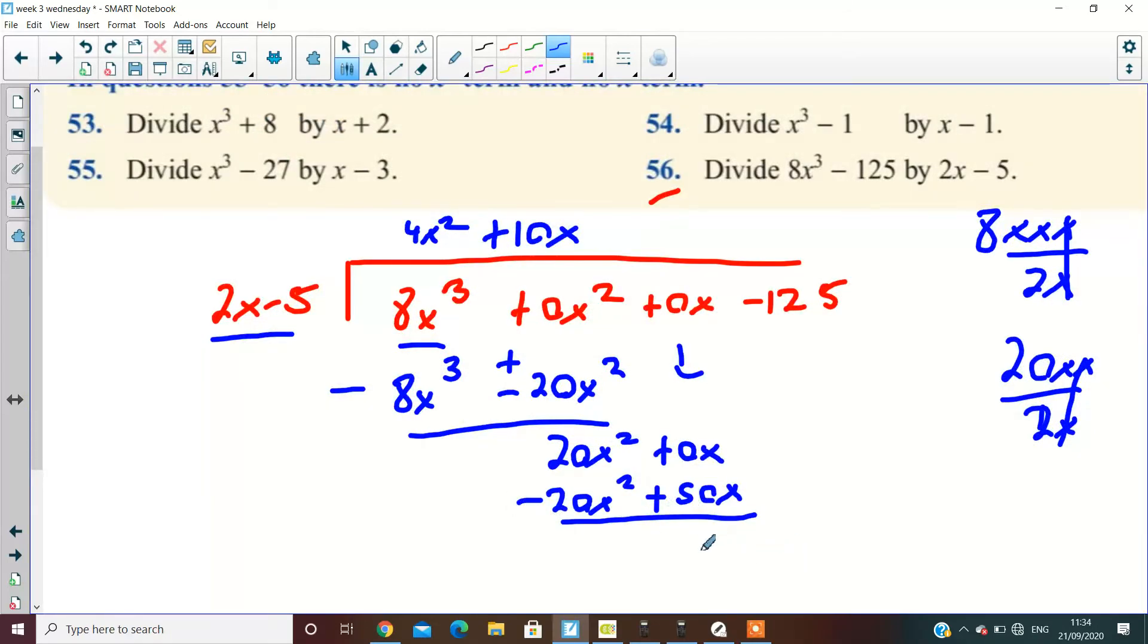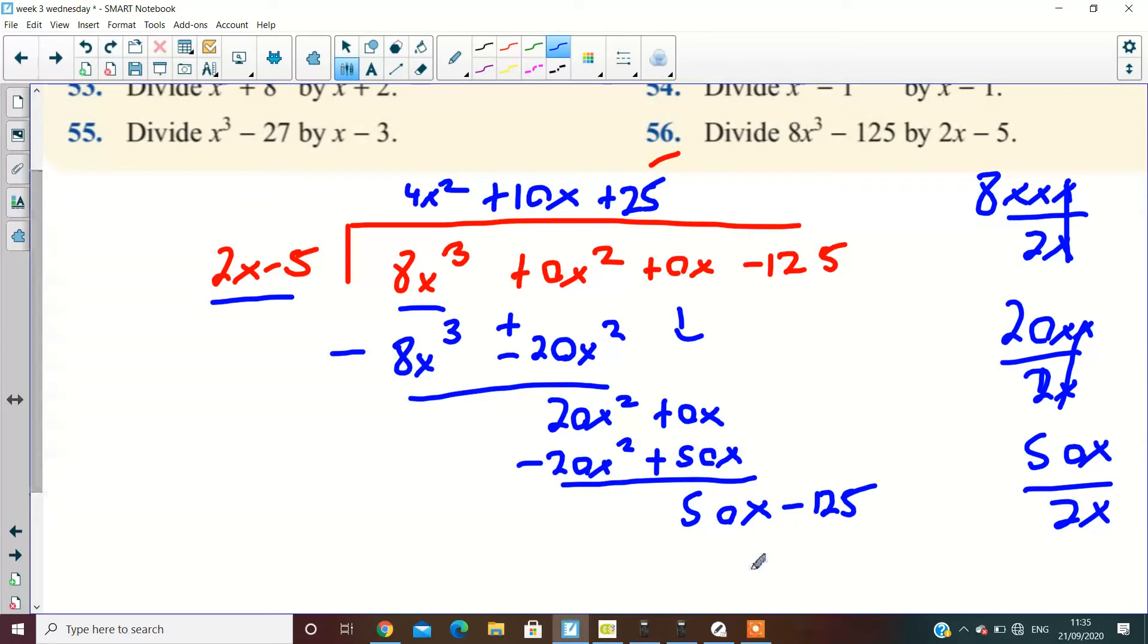And you get 50x minus, finding what's 50x divided by 2x, plus 25, then what happens there? Minus 50x, oh, sorry, 50x minus 125, then change it to a plus minus and you end up with 0. So, all right. We all know how to divide. What is this full exercise about? Full exercise is about division. Would you agree with that?